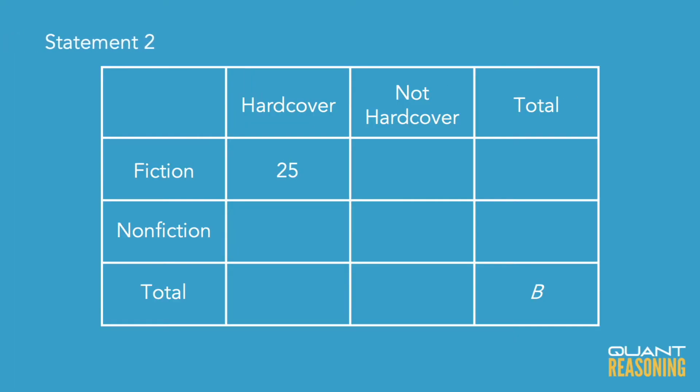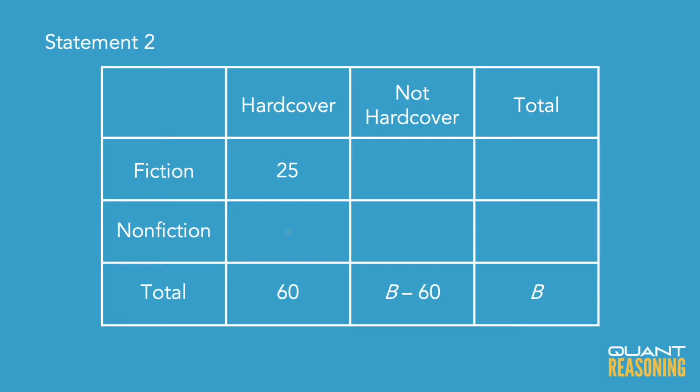Statement two is kind of symmetric to statement one, because statement two gives us the total number of hardcover — that's 60. Similar to what I did with statement one, I can infer from statement two that the number of books that are hardcover but not fiction is the difference between 25 and 60, so that would be 35.